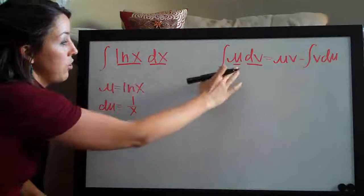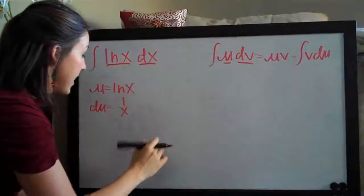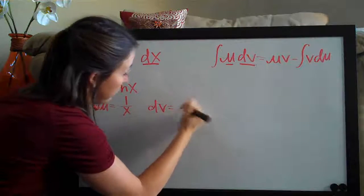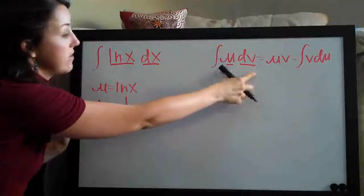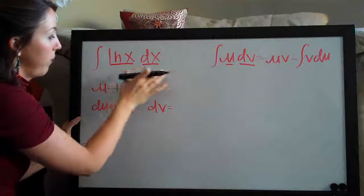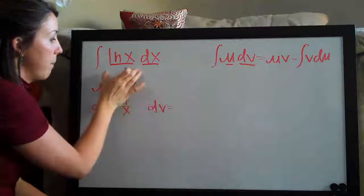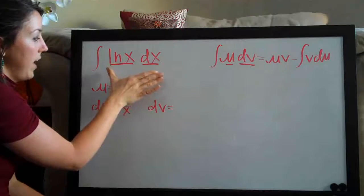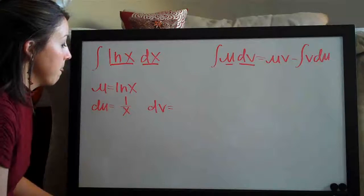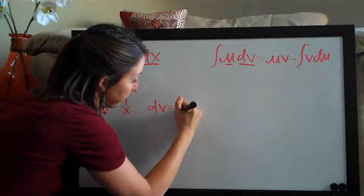So if ln of x is our u, then that means that dv has to be dx here. When we assign these two values, u and dv, they have to be assigned to values in our problem. We can't have anything left over. u has to take up part of it, dv has to take up the other part and every part has to be represented in u and dv, so dv has to be dx.